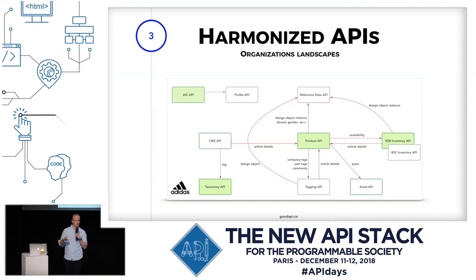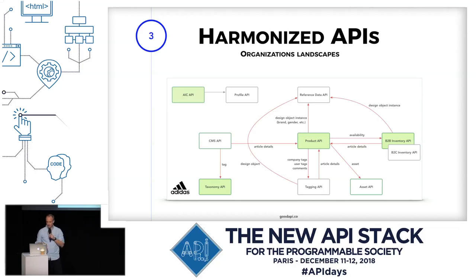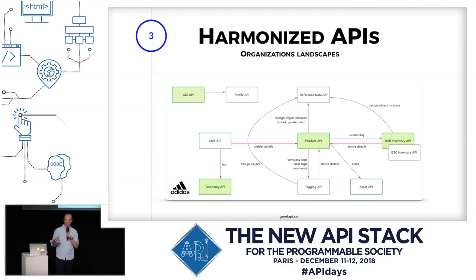You have a product API, inventory information, reference data, a catalog of assets around the product — these are all APIs. Chances are, if you are a client there, you would like to have some consistency between these APIs — not different authentication schemes and different ways things are done.